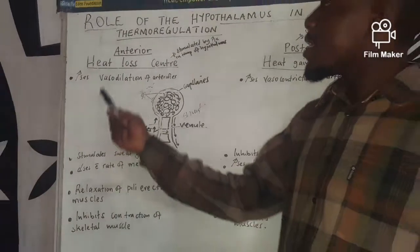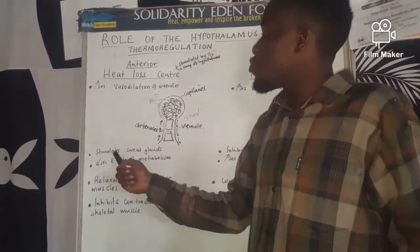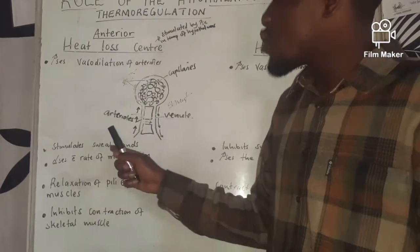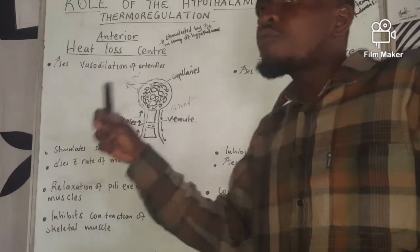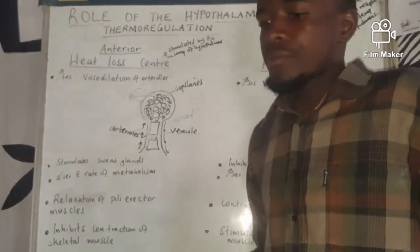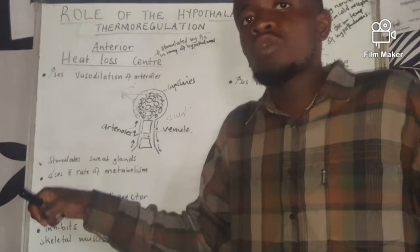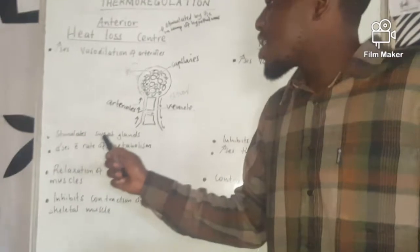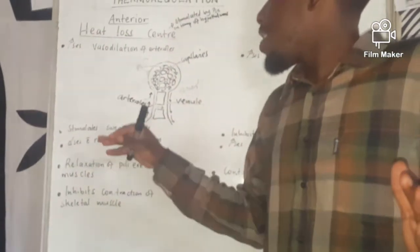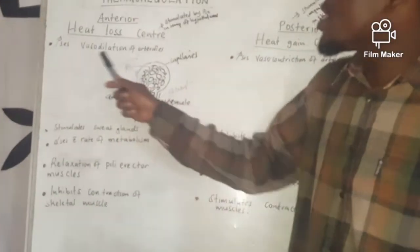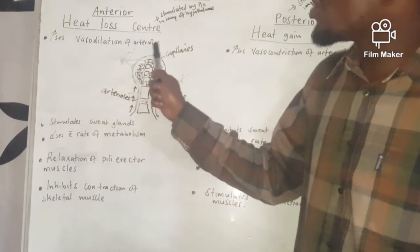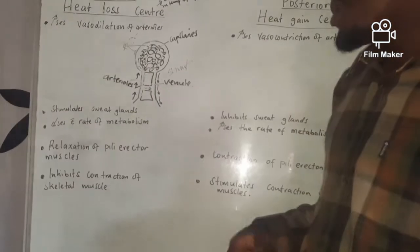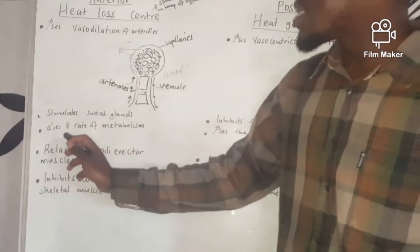Another response is that the heat loss center stimulates the sweat glands, instructing them to produce more sweat. By producing more sweat, excess heat is lost by evaporation. This vasodilation also results in loss of more heat by conduction, convection, and radiation.